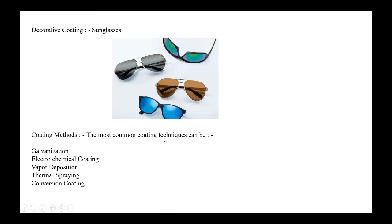There are various methods of coating, such as galvanization, electrochemical coating, vapor deposition, thermal spray, and conversion coating.